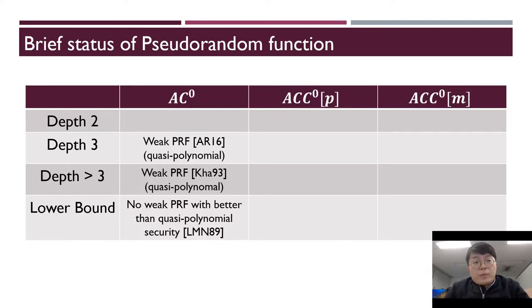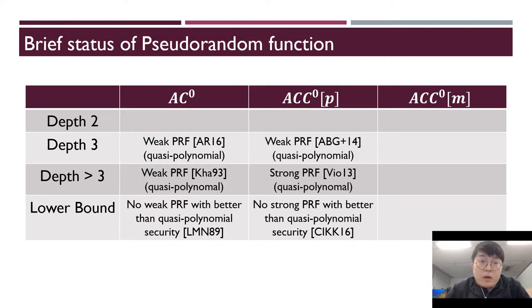I will talk about the brief status of pseudorandom functions. Linial, Mansour, and Nisan present a quasi-polynomial time learning algorithm for learning AC^0 circuits, and the classic result by Kharitonov gives a candidate weak PRF with quasi-polynomial time security. A nice construction by Benny and Patel shows a weak PRF which is depth 3. Now move to larger complexity class with a mod p gate, where p is prime. Carmosino et al. shows that no strong PRF has better than quasi-polynomial security, and Viola constructs strong PRF with quasi-polynomial time security.